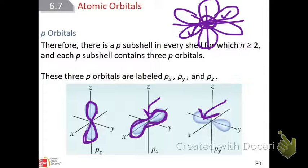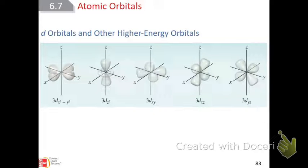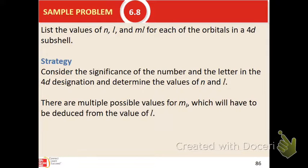The D orbitals start in the third energy level and look like four-leaf clovers — with one that looks like a P with a donut around it. The F orbitals fill those two rows at the very bottom of your periodic table that you always wondered about. They're mostly for radioactive elements. They're shaped like seven-petaled daisies, with seven petals each.